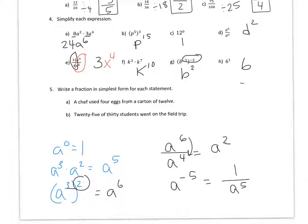And then number 5, write a fraction in simplest form. So a chef used 4 eggs from a carton of 12. So you need to reduce 4 twelfths, which is 1 third. And then 25 of 30 students went on a field trip. This reduces to 5 sixths.